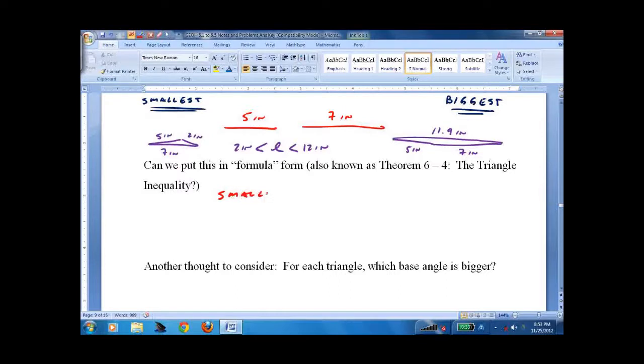So, smallest, if you have two pieces A plus B, let's say the third side is C.